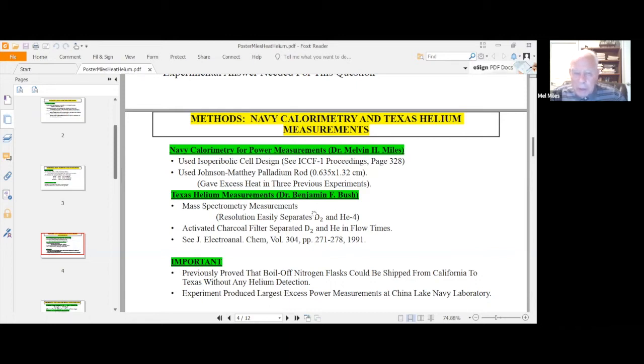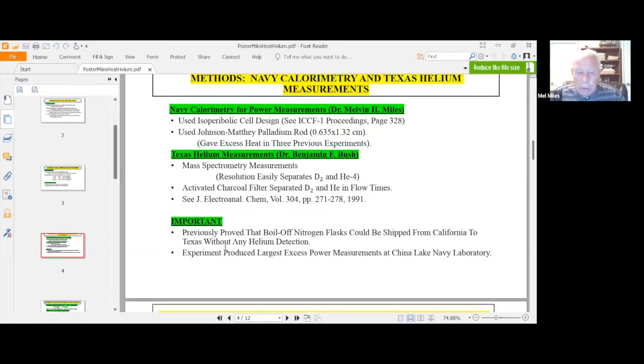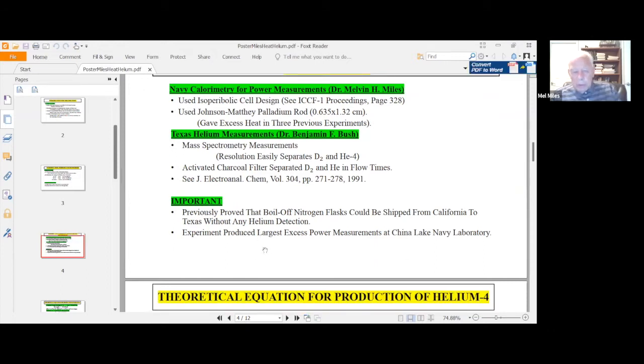We did the experiments late in 1990, but the publication came out as a preliminary note in 1991, around March. And it's important to note that we did previously prove that you could ship boil off nitrogen flask from California to Texas without any helium-4. That's because boil off nitrogen did not have any helium-4 in it. At least we couldn't measure any. So that was the carrier gas we used.